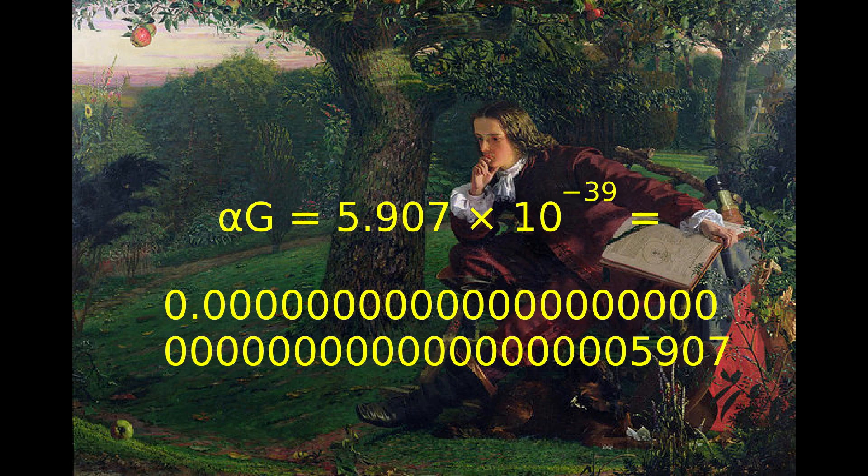It is striking how small alpha sub g is. The smallness of alpha sub g means gravity is exceptionally feeble compared to the other forces, so much weaker it's an unsolved mystery of physics, called the hierarchy problem.